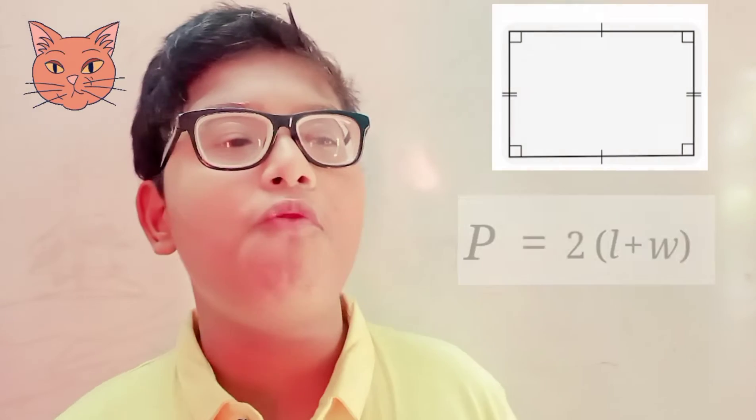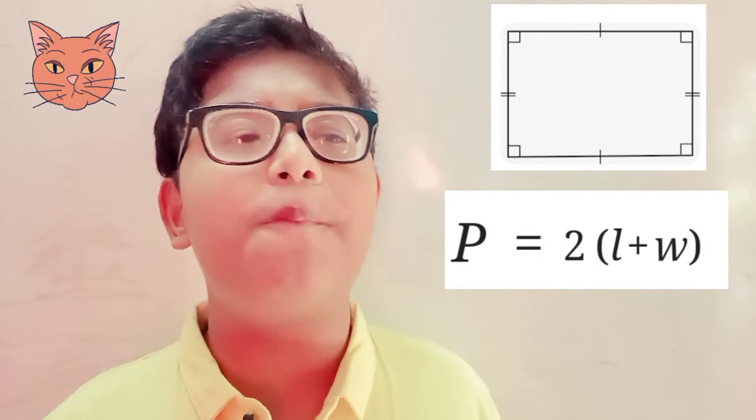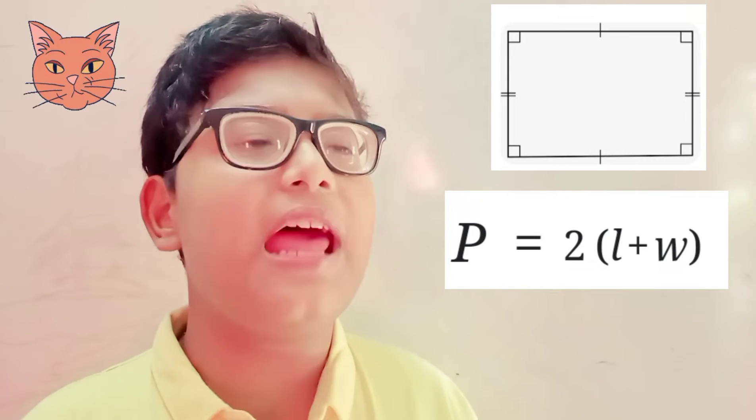When we say perimeter, we are referring to the length of the polygon's outline. We calculate perimeter by adding together the length of each side.